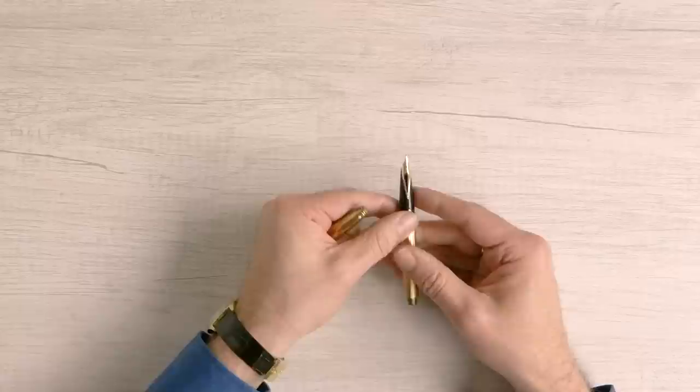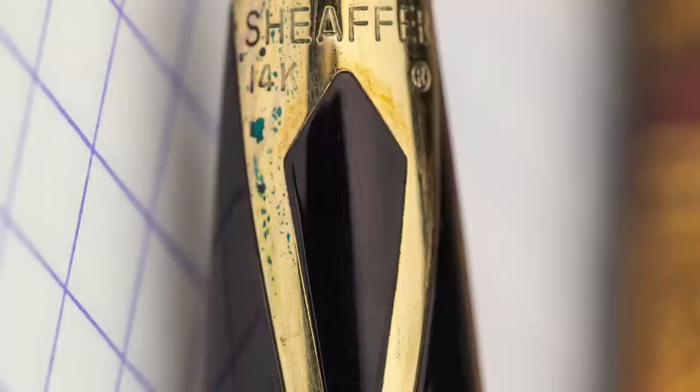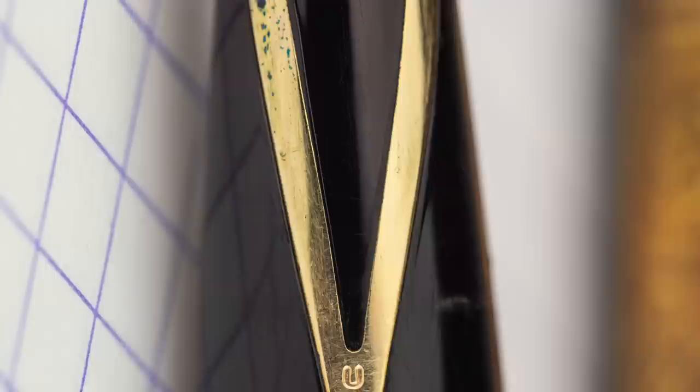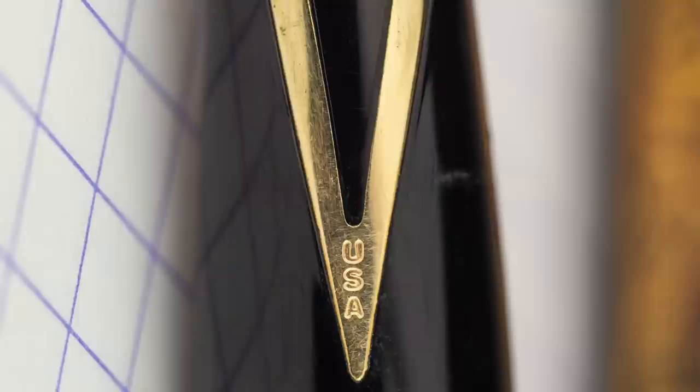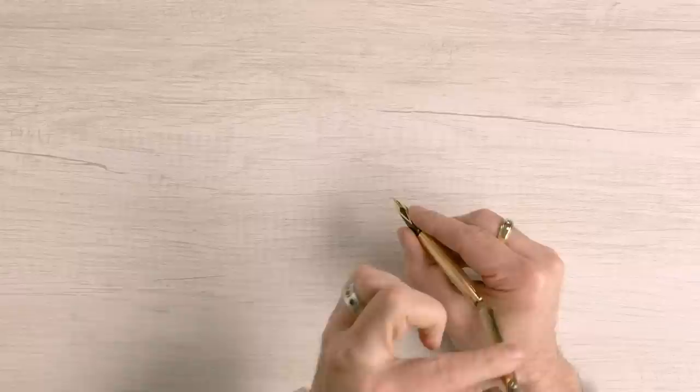So let's take the cap off. They're friction fit caps so they just slide right off, and they all feature this beautiful inlaid nib. Now there were some later Schaefer Imperials that had a conical nib, but for the purposes of this conversation and for most collectors, this is the Imperial. It's got this beautiful inlaid nib, same that was on the PFM, but it's a little bit more slender.